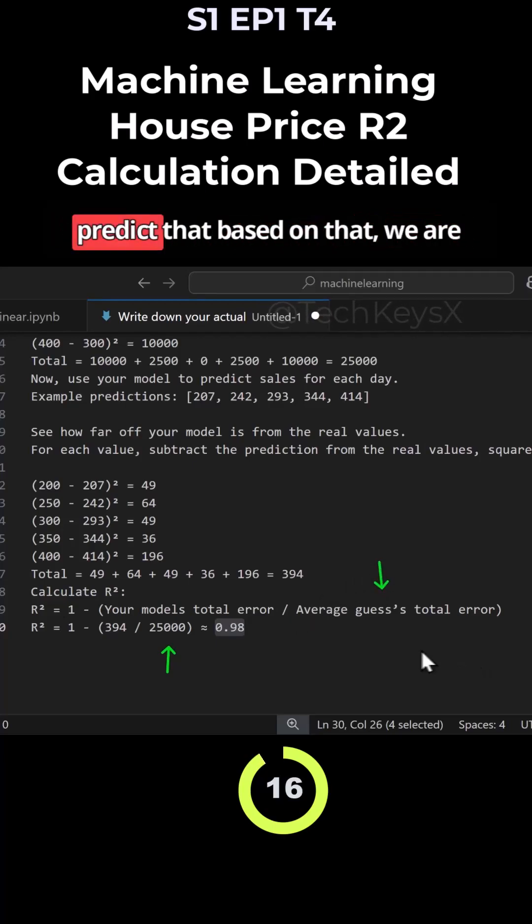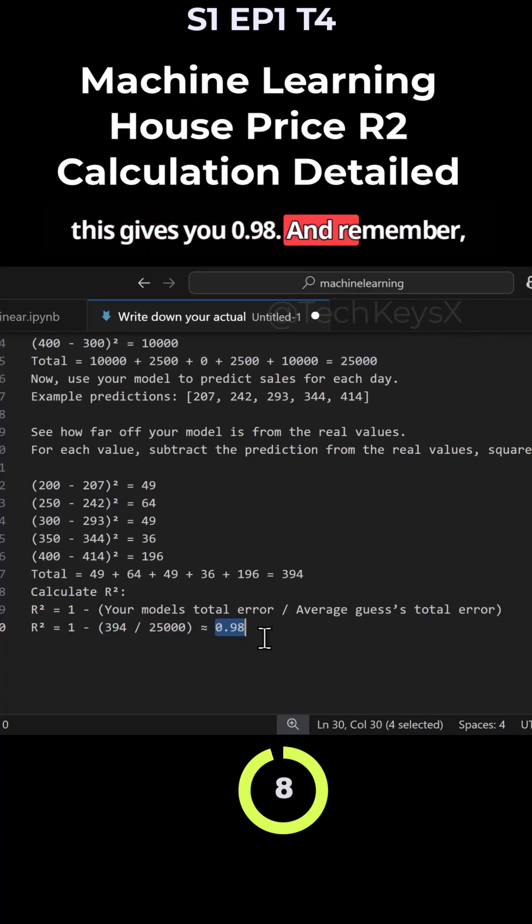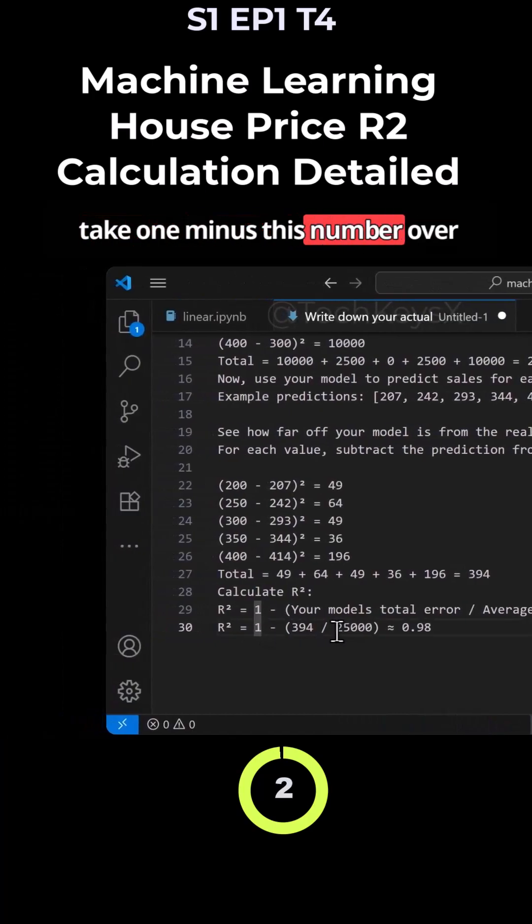So if a user were to guess it, then we predict that based on that, we are likely to be 98% better than the guess. So that's why 394 divided by this gives you 0.98. And remember we are doing one minus here. This is a very small percentage, so take one minus this number over here which gives you 0.98.